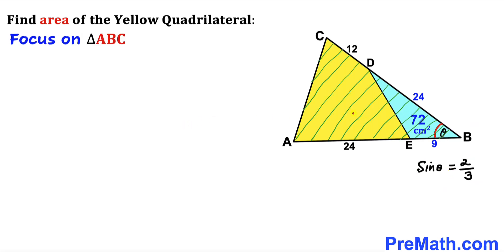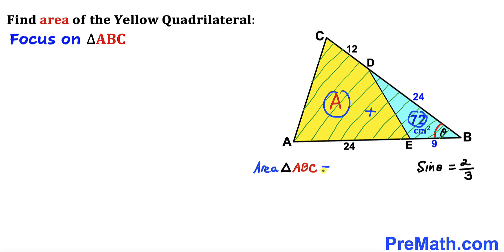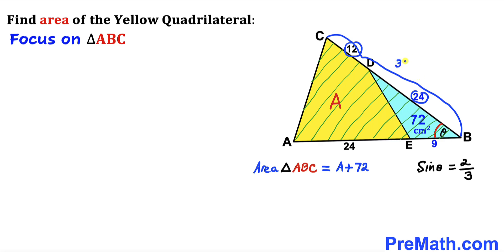Now let's focus on the big triangle ABC. The area of the yellow quadrilateral is uppercase A, so the combined area of triangle ABC is A plus 72. The side lengths of triangle ABC are 12 plus 24, which gives us 36, and the other side is 9 plus 24, giving us 33.